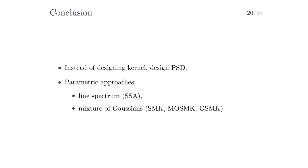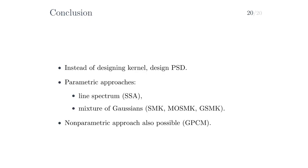Let's wrap up. Instead of designing the kernel, one can design the power spectral density, which has simpler requirements than the kernel. We have seen several parametric approaches: the sparse spectrum approximation parameterizes the PSD with a symmetric average of lines, whereas the spectral mixture kernel and its extensions to multiple outputs and non-stationary signals parameterize the PSD with a symmetric mixture of Gaussians. We have also seen a more flexible non-parametric approach — the Gaussian process convolutional model — which uses a cleverly transformed Gaussian process to induce a non-parametric prior over PSDs. Compared to the parametric approaches, inference then becomes a little bit more complicated. Thank you.